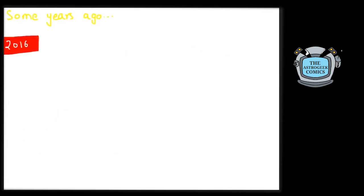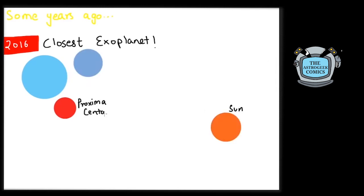In 2016, we had another surprise when we found the closest exoplanet to us. That too, around the closest star to the Sun, Proxima Centauri, located just 4.2 light years away.